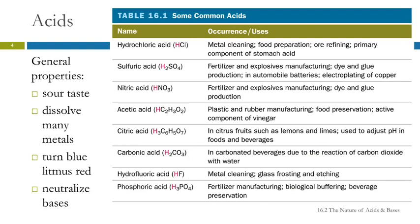Here are some common acids and where they occur and are used. As you can see, there's a lot of different uses for them. When we look at the formulas for acids, we notice that they all start with a hydrogen, and they are written that way intentionally because that's the hydrogen that's acting as the acid. Some of these, like acetic acid, there's one hydrogen out here and there's three hydrogens in there, and that's done for a reason that we will talk about.